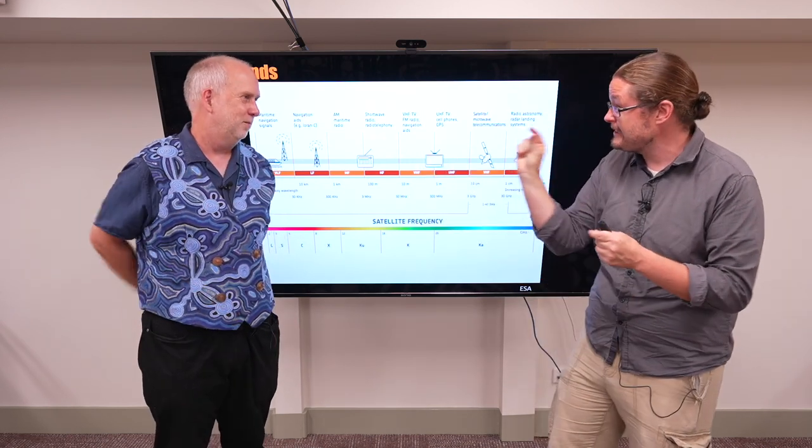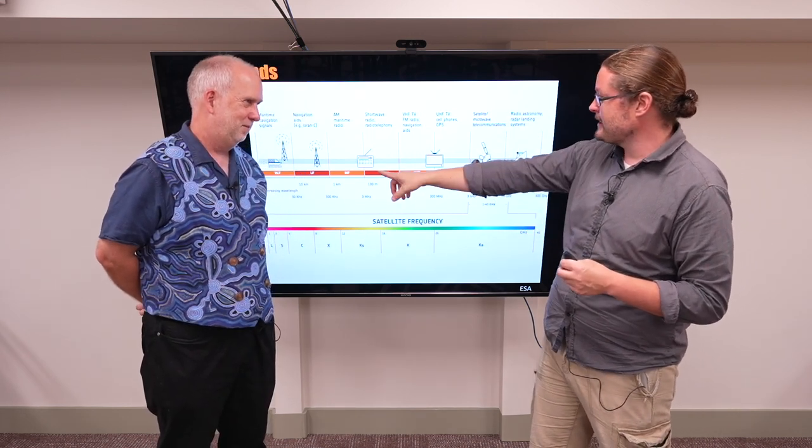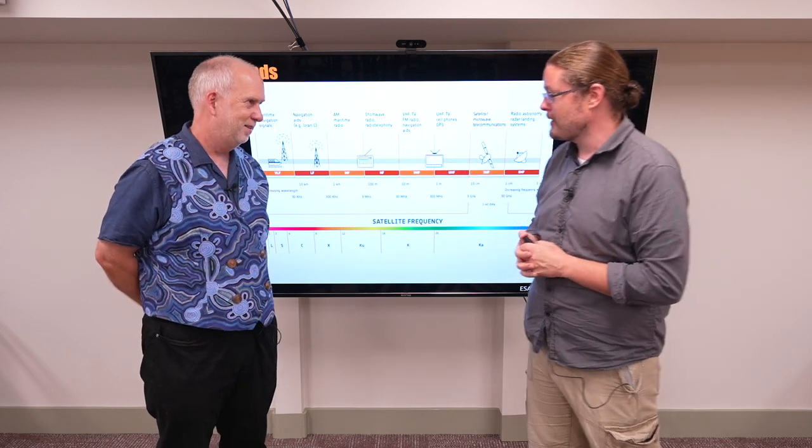So if you're trying to detect that really faint one in a billion or one in a trillion signal from Mars, you're probably going to get interrupted if you try and listen when the football is being broadcasted.